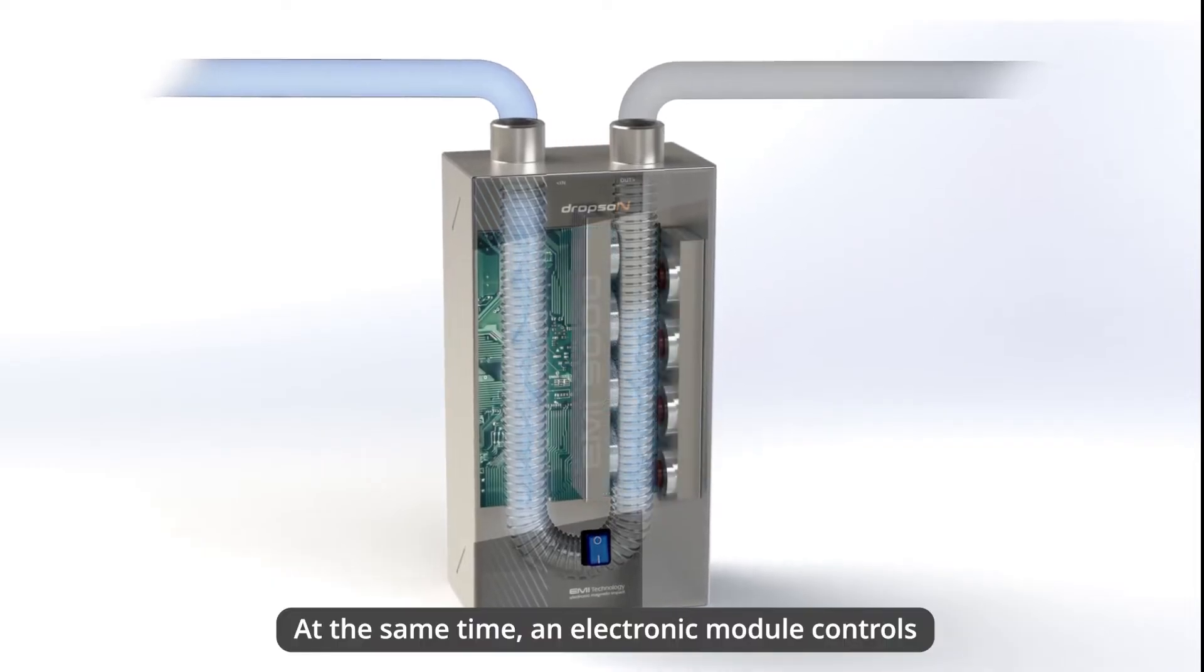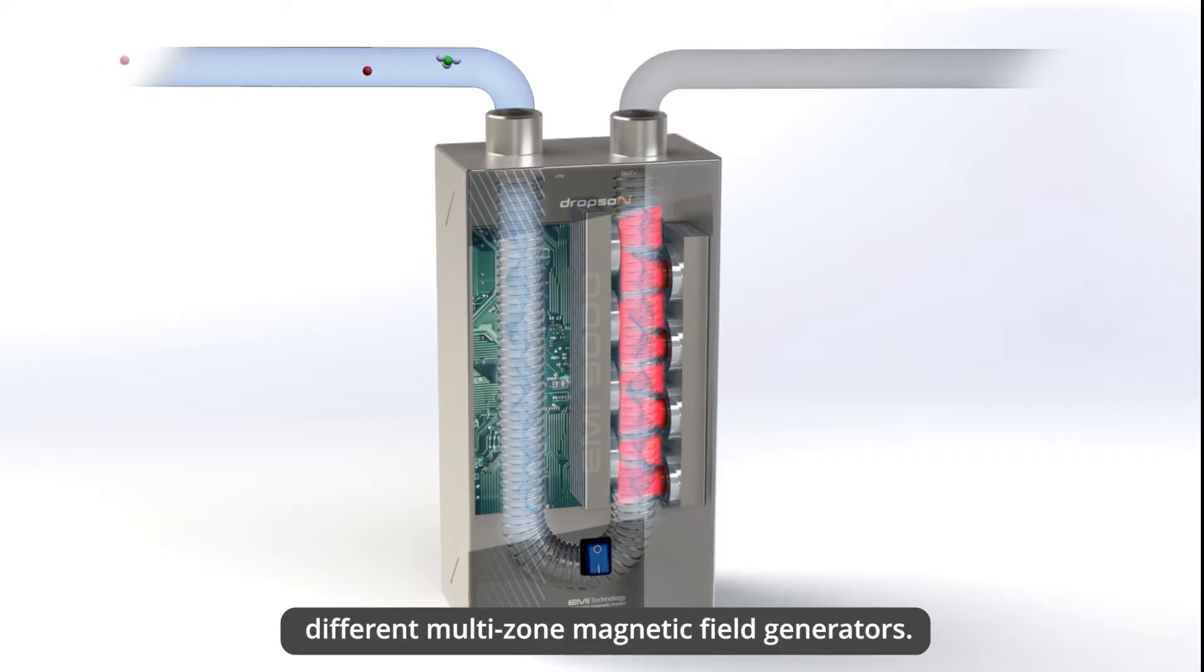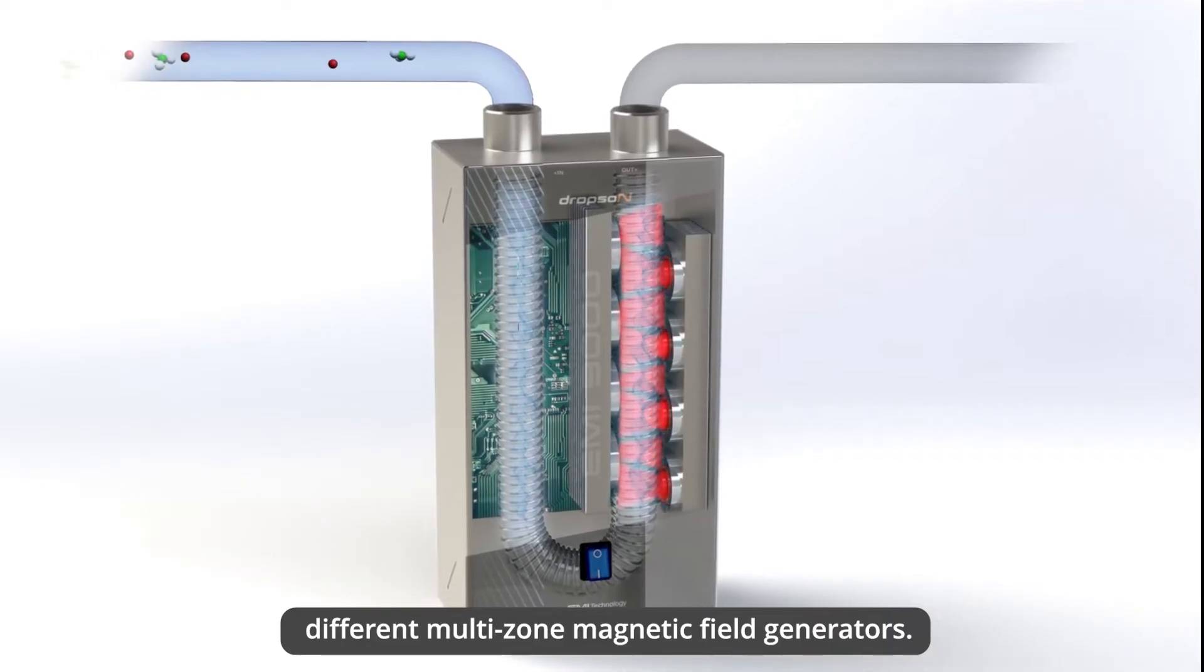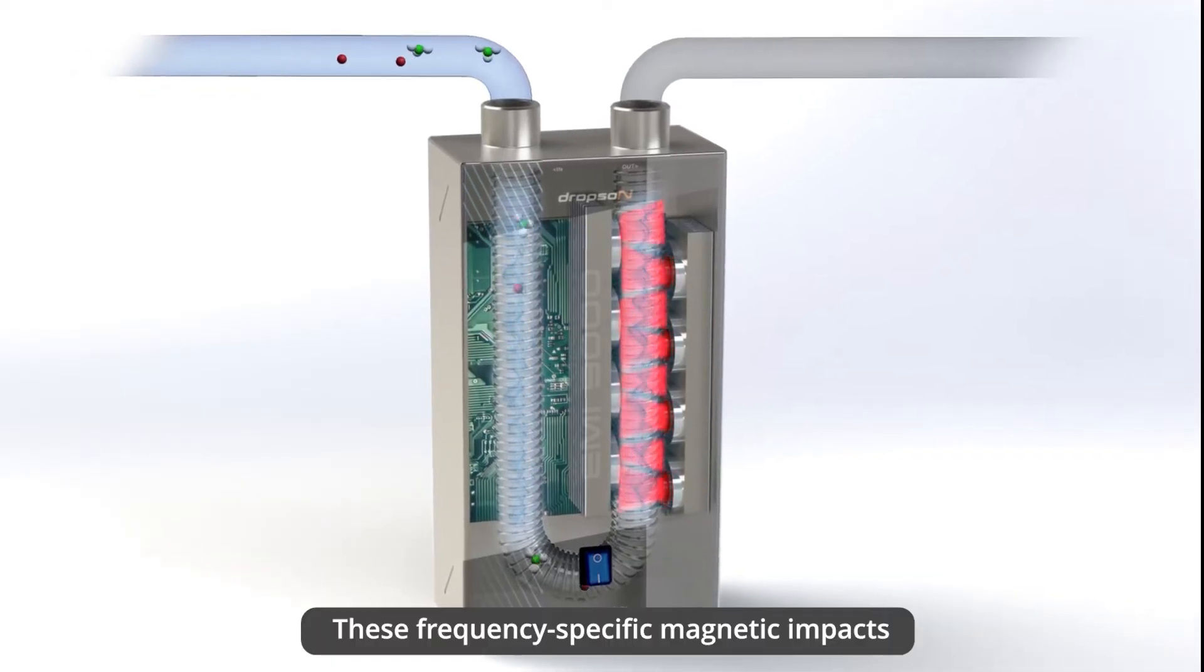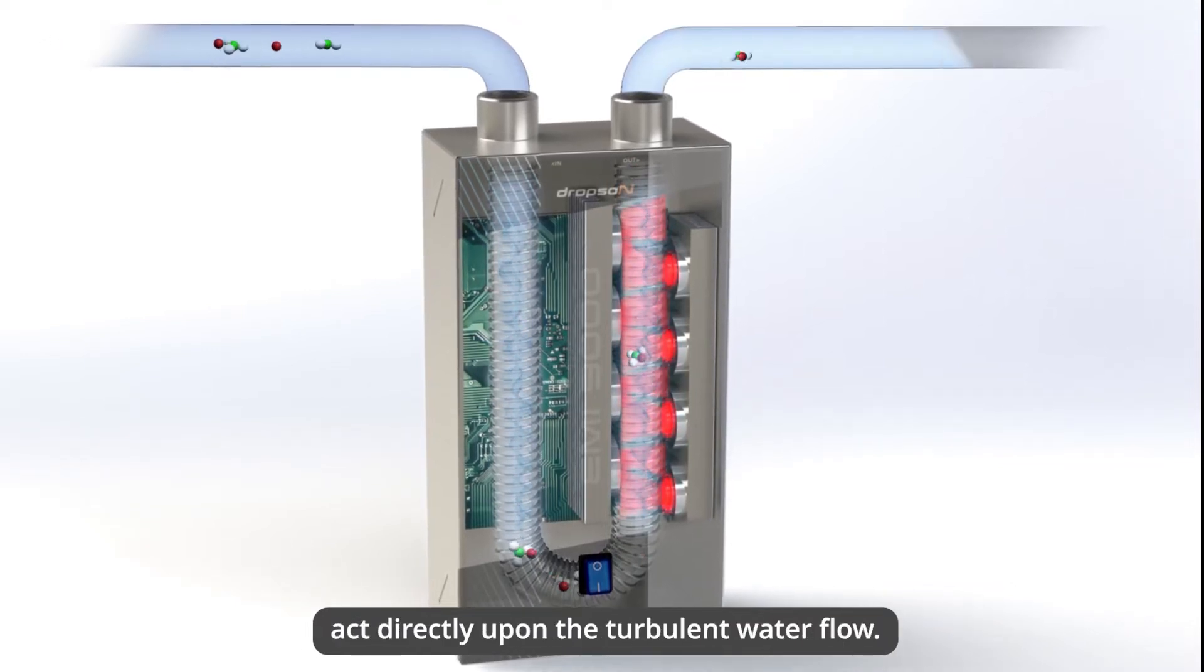At the same time, an electronic module controls different multi-zone magnetic field generators. These frequency-specific magnetic impacts act directly upon the turbulent water flow.